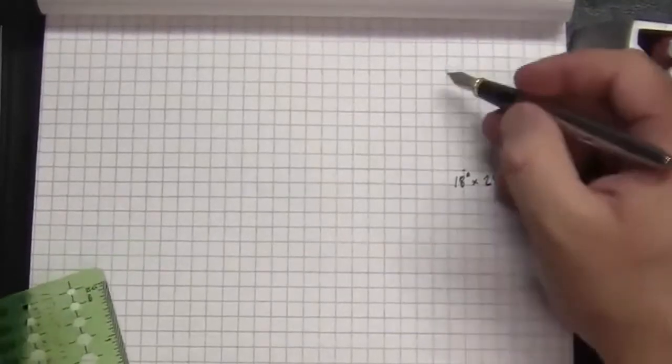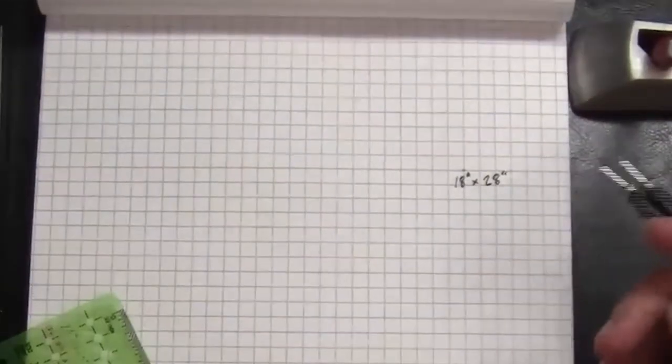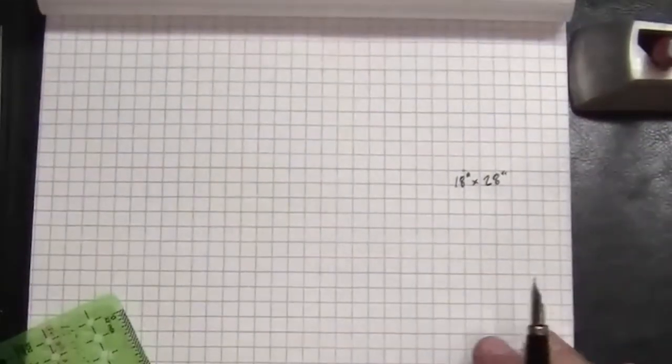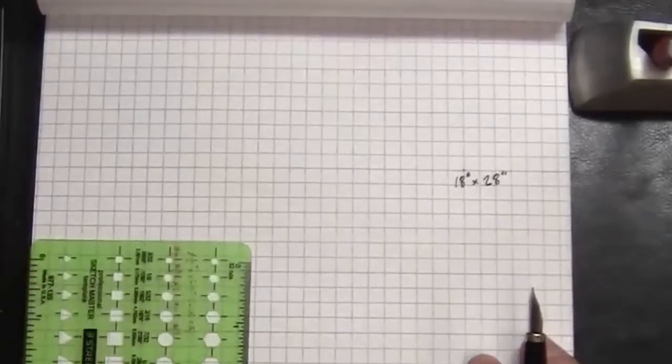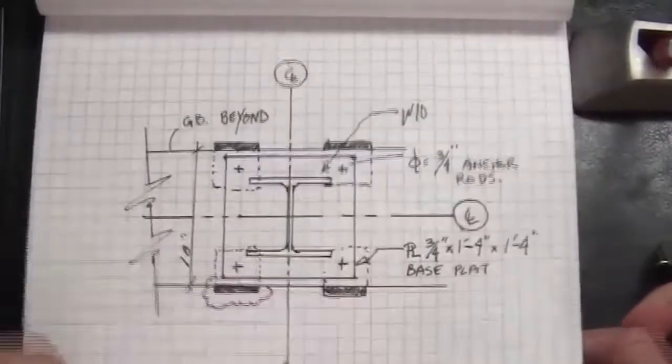And to start with, this will be one where a column base plate is coming down on the grade beam. And we're going to do a section through the grade beam.